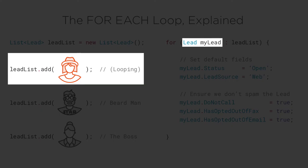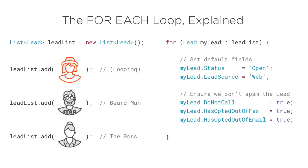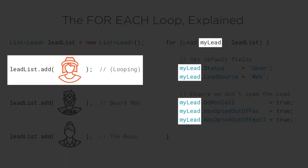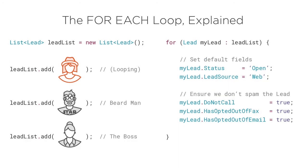Our my lead variable gets temporarily assigned to hat girl and the code inside our for each loop executes. Since our code updates the fields on the my lead variable and hat girl is assigned to the my lead variable for this iteration, hat girl's fields are changed.